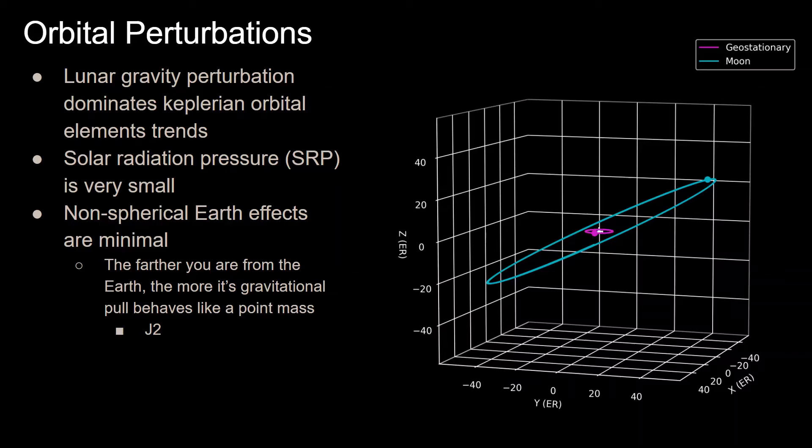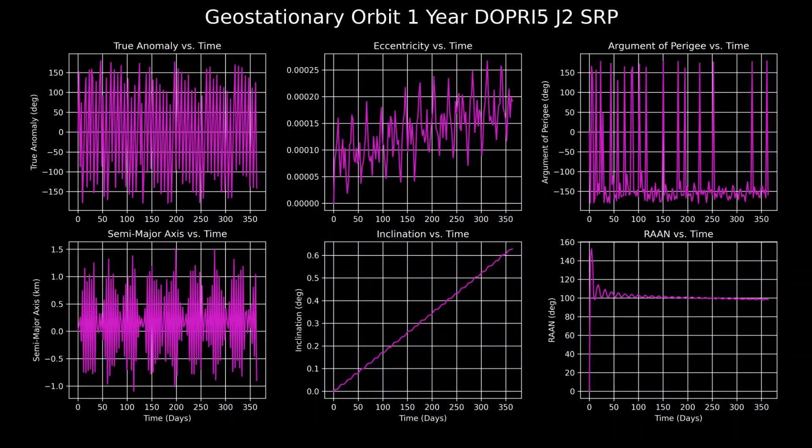Going into J2, the fact that the Earth's equatorial radius is larger than its polar radius, which is where the J2 perturbation comes from, matters way less at this distance, because Earth looks a lot more like a point mass when you're so far away.